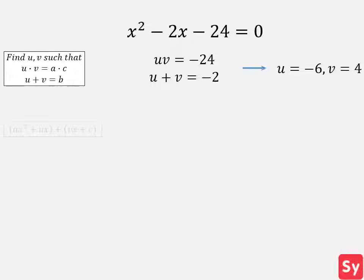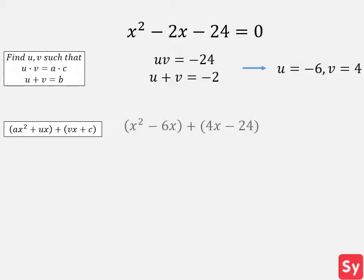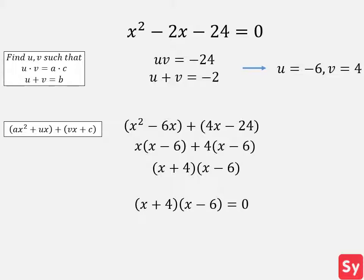Next, we rewrite x squared minus 2x minus 24 by plugging in those values. We factor out an x from x squared minus 6x, and we factor out a 4 from 4x minus 24. Now we can factor out x minus 6 from the sum and get x plus 4 times x minus 6. We set each factor equal to zero and solve for x, getting x equals negative 4 and x equals 6 as our answer.